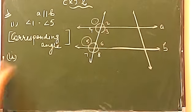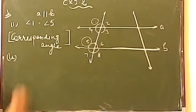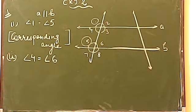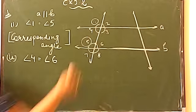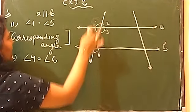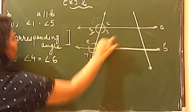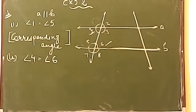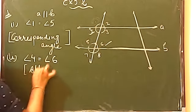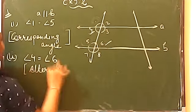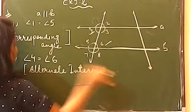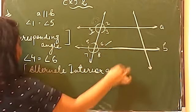The second property says that angle 4 is equal to angle 6. Why? Angle 4 and angle 6 are equal. See the figure. Alternate interior angle. They are interior because they are forming inside, so alternate interior angles are these. They are inside the portion — Z shape.